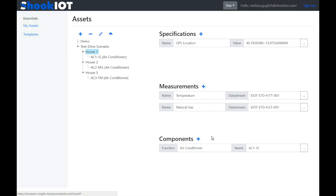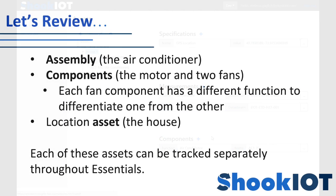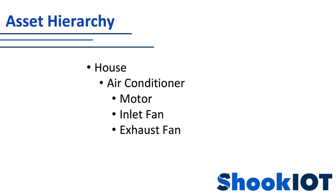There are two fans, each with a separate function within the air conditioner. One fan has the function of inlet fan, and the other has the function of exhaust fan. These each have measurements for the speed of that fan. For the asset hierarchy, we're seeing something very similar to the way operators in a plant have been visualizing the assets they have to take care of. There is a very common plant-area-unit hierarchy typical to a lot of plants, and in this small example, we're looking at a house, air conditioner, motor, and fan.